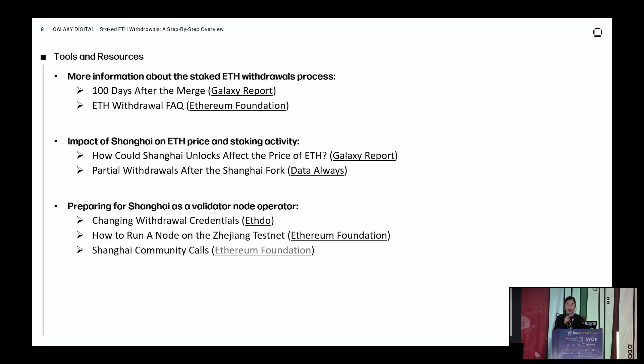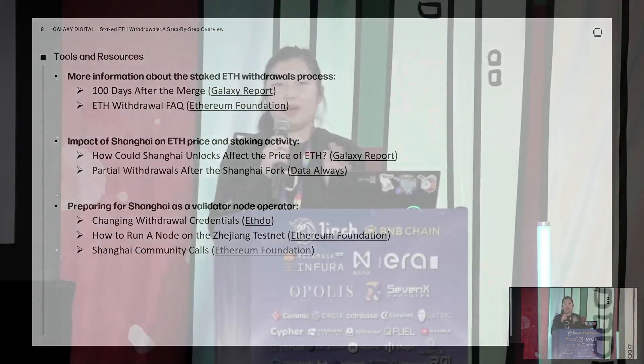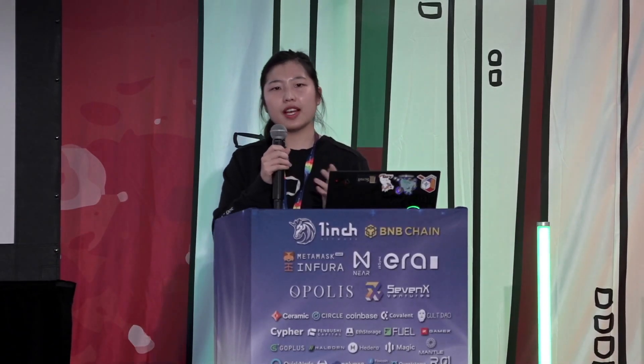Data Always, who helped with this chart, has a great blog post about the impact of partial withdrawals after the Shanghai fork. ETH.do is a great tool for helping validator node operators construct their signed messages correctly for updating withdrawal credentials, with a step-by-step guide called 'Changing Withdrawal Credentials.' There are also public testnets: Ethereum developers announced the Görli testnet would be live March 14th. If you want to try things out already, there's the Zhejiang testnet, and the Sepolia testnet has a permissioned validator set. As a validator node operator, make sure your software is upgraded and you're ready for unlocks.